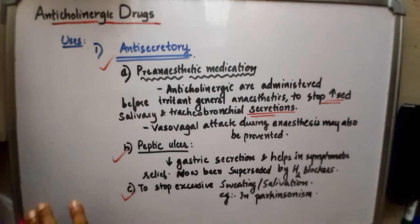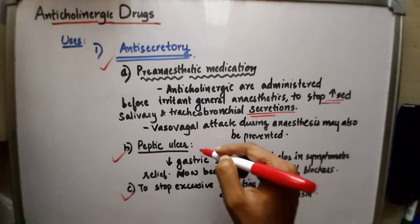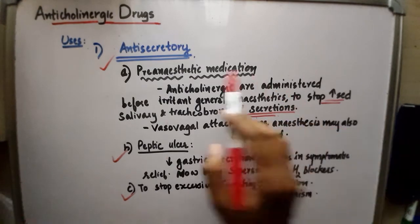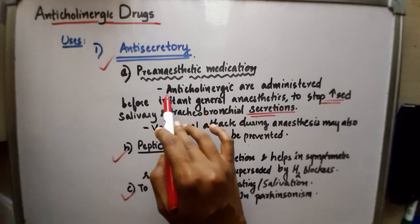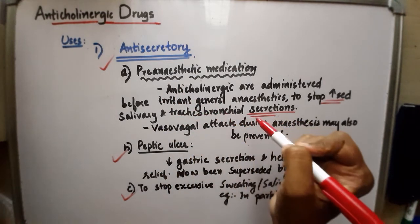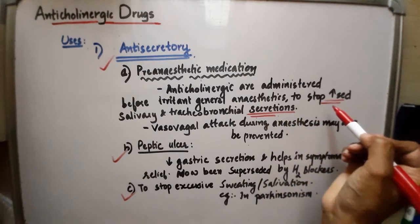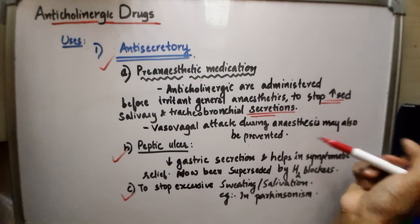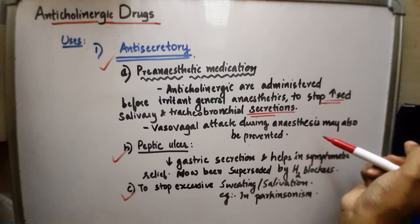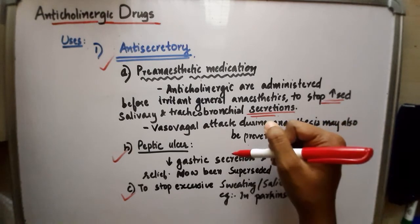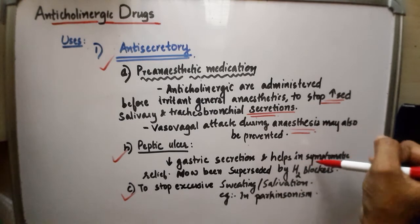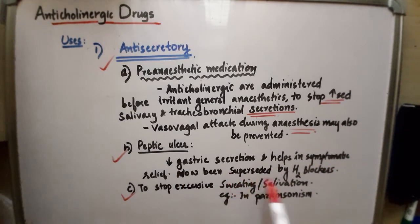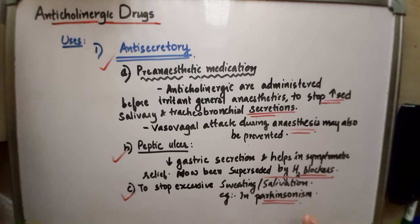The uses of anticholinergic drugs include use as anti-secretory agents. In pre-anesthetic medication, they are administered prior to general anesthetics like ether to stop increased salivary and tracheobronchial secretion and to prevent vasovagal attack during anesthesia. In peptic ulcer, they decrease gastric secretion and help with symptomatic relief, though they are now superseded by H2 blockers. They are also used in parkinsonism to stop excess sweating or salivation.